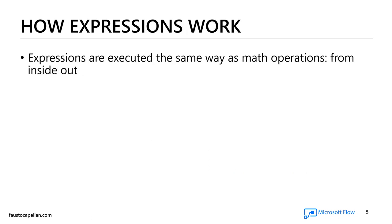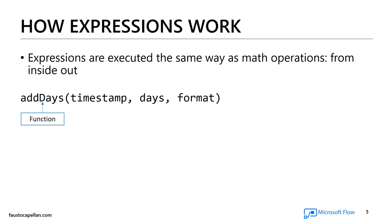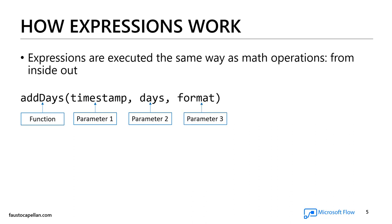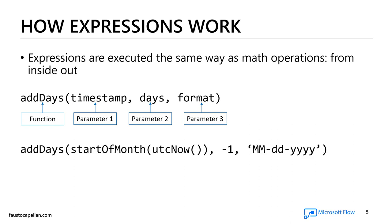How expressions work. Expressions are executed the same way as math operations — they're executed from the inside out. For example, here we have the addDays function. This function has three parameters: the timestamp you want to either add or subtract days from, the number of days to add or subtract, and the output format for the date once the function is completed. For my first parameter, I want to get the current date and time using utcNow, which gives you the current date and time in UTC format. Whenever you work with UTC, you have to compensate for your time zone.